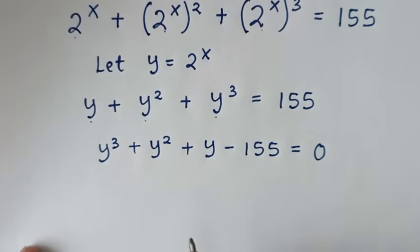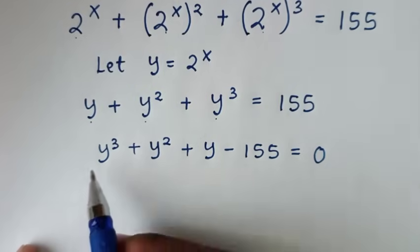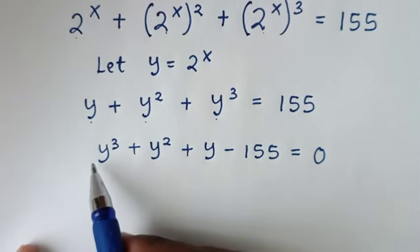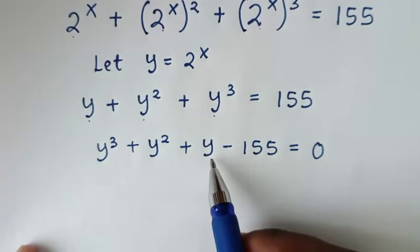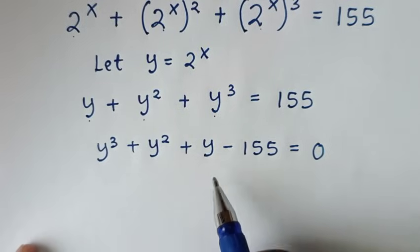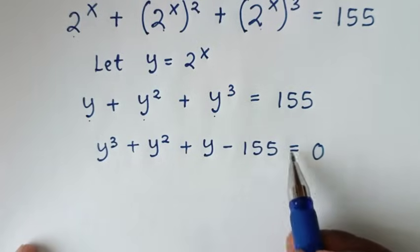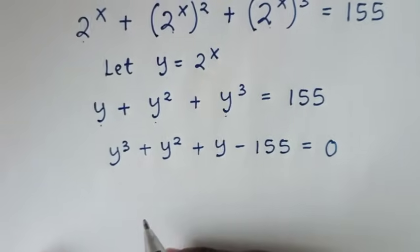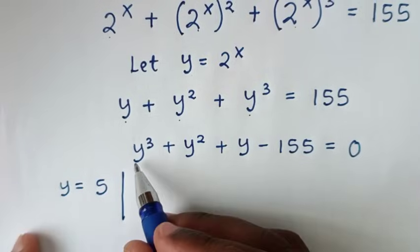In the next step, we will check which value will satisfy this equation. If we check for y equal to 1, this 155 is the largest number, so when we substitute y equal to 1 it will not be equal to 0. When we substitute 2, it also is not equal to 0. 3 also is not equal, 4 is not equal. So for 5, it will satisfy, because 5 is one of the factors of 155. So let's check for y equal to 5 — let's substitute 5.